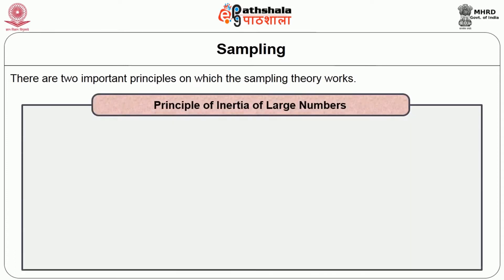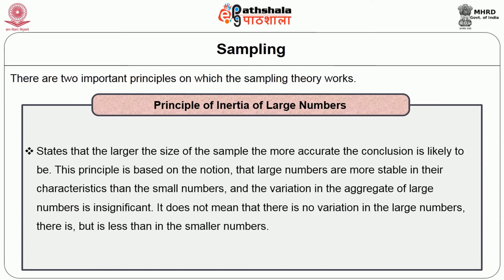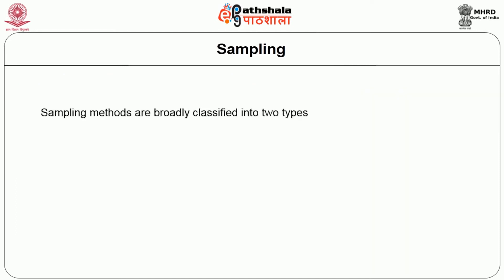The principle of inertia of large numbers states that the larger the size of the sample, the more accurate the conclusion is likely to be. This principle is based on the notion that large numbers are more stable in their characteristics than small numbers, and the variation in the aggregate of large numbers is insignificant — not absent, but less than in smaller numbers.